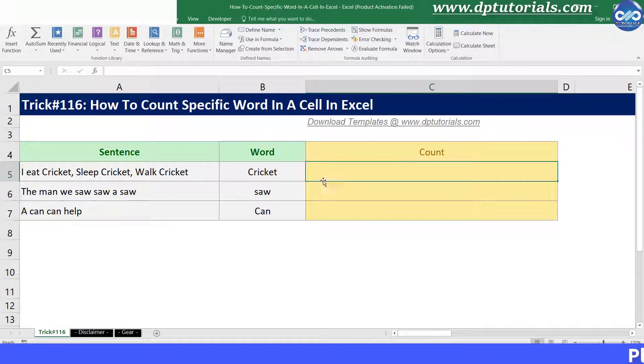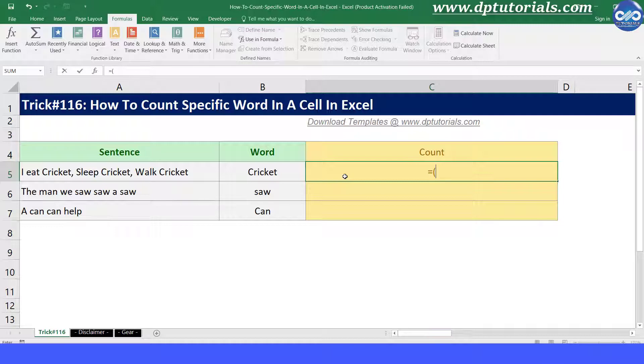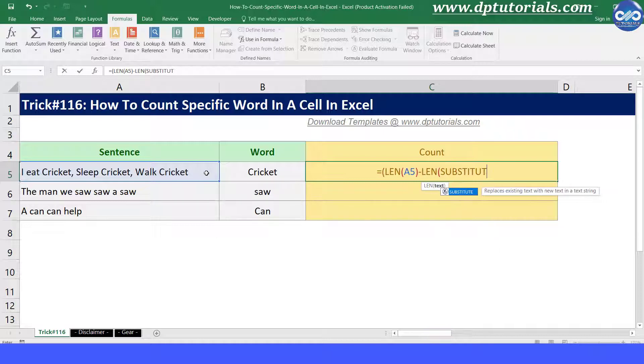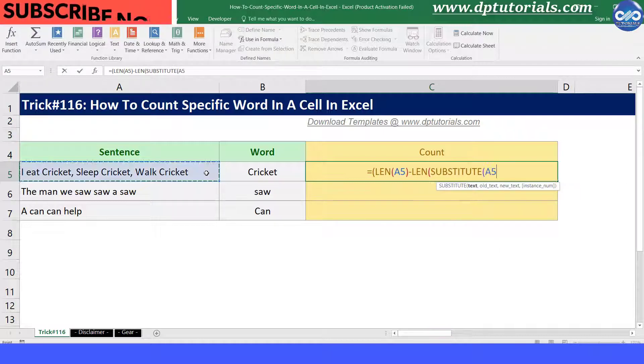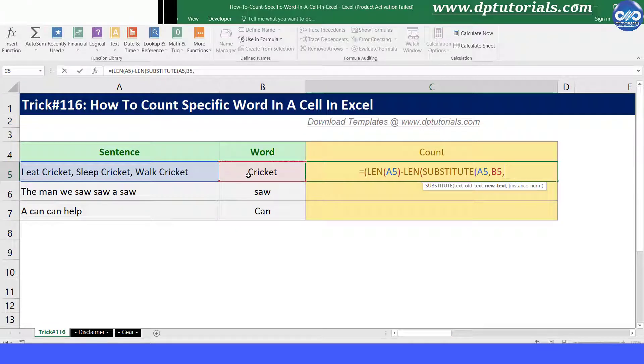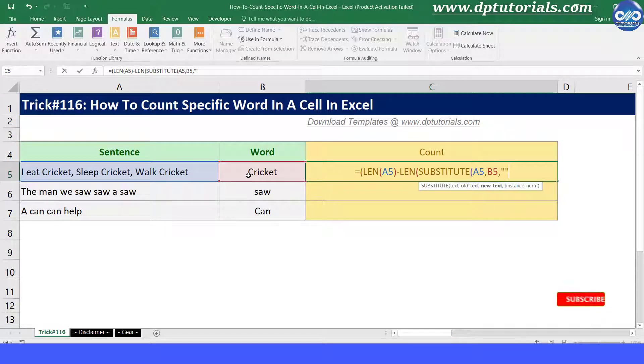So enter the formula in cell C5 as equals to, open bracket, LEN, open bracket, A5, close bracket, minus, LEN, open bracket, SUBSTITUTE, open bracket, A5, comma, B5, comma, inverted commas, inverted commas, close bracket.